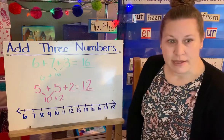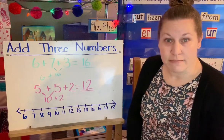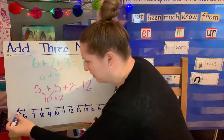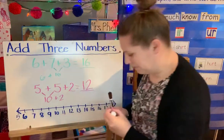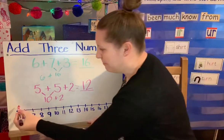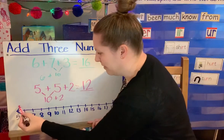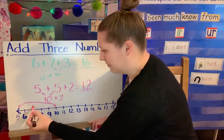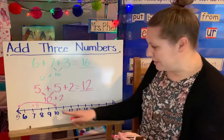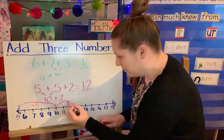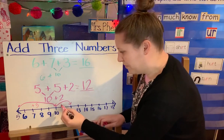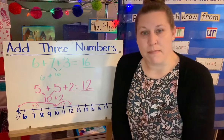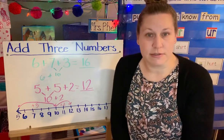I can use the number path again if I want to. I need to add the number 5 down there. So if I start there with the number 5 and I add 5, that gives me to 10 — that's 5 plus 5. And now I need to do 10 plus 2. So that is adding three numbers using the make a 10 strategy that we learned last week.